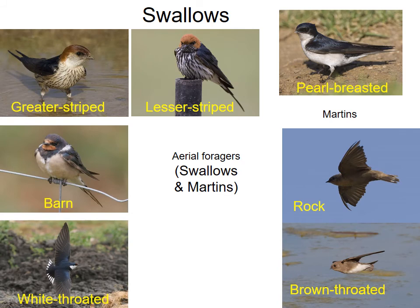In terms of aerial foragers, swallows and martins are well represented. Martins tend to be brown and white, while swallows tend to have at least some metallic blue plumage. Rock martins are often associated with buildings, and brown-throated martins with water. Some species stay in South Africa year-round, others migrate into Africa, and still others — like the barn swallow — migrate all the way to Europe during the Southern African winter.